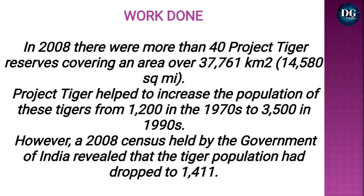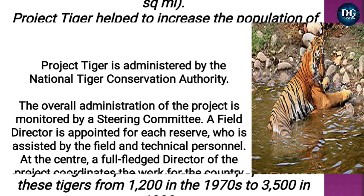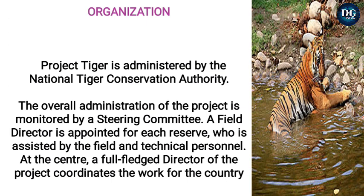Project Tiger aimed to increase the population of tigers from 1,200 in 1970 to 3,500 in the 1990s. However, the 2008 census held by the Government of India revealed that the tiger population had dropped to 1,411. Project Tiger is administered by the National Tiger Conservation Authority.